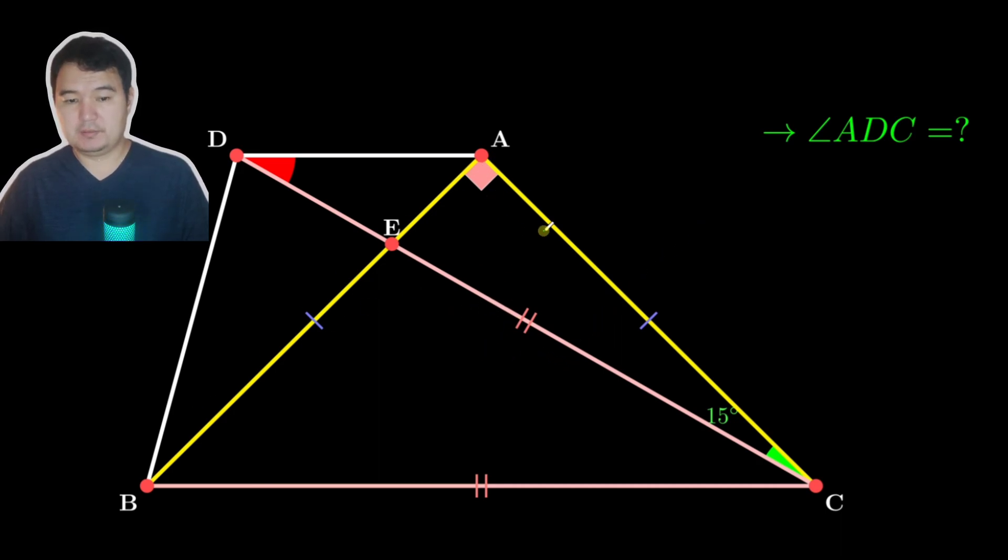We have an isosceles-right triangle, which means we have 45 degrees here and 45 degrees here. To make 45, we need 30. So 30 plus 15 is a 45 degree angle.